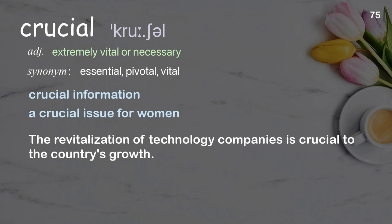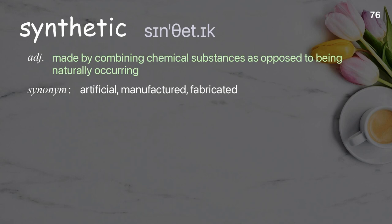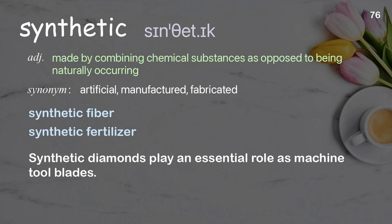Synthetic: made by combining chemical substances, as opposed to being naturally occurring. Examples: synthetic fiber, synthetic fertilizer. Synthetic diamonds play an essential role as machine tool blades.